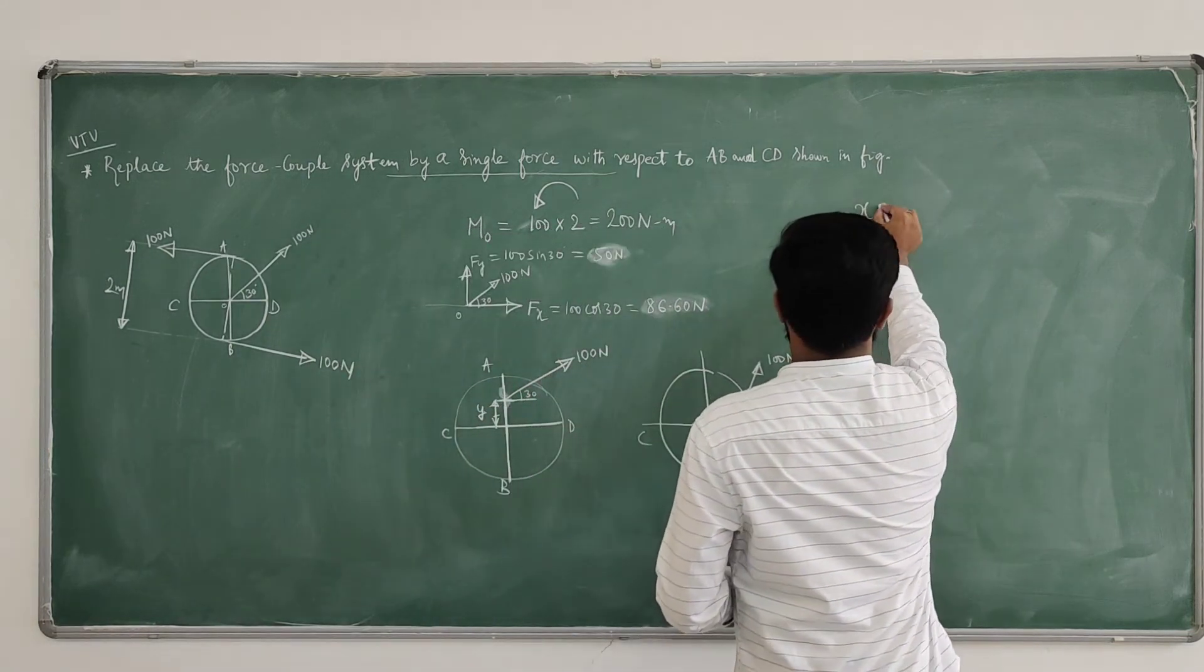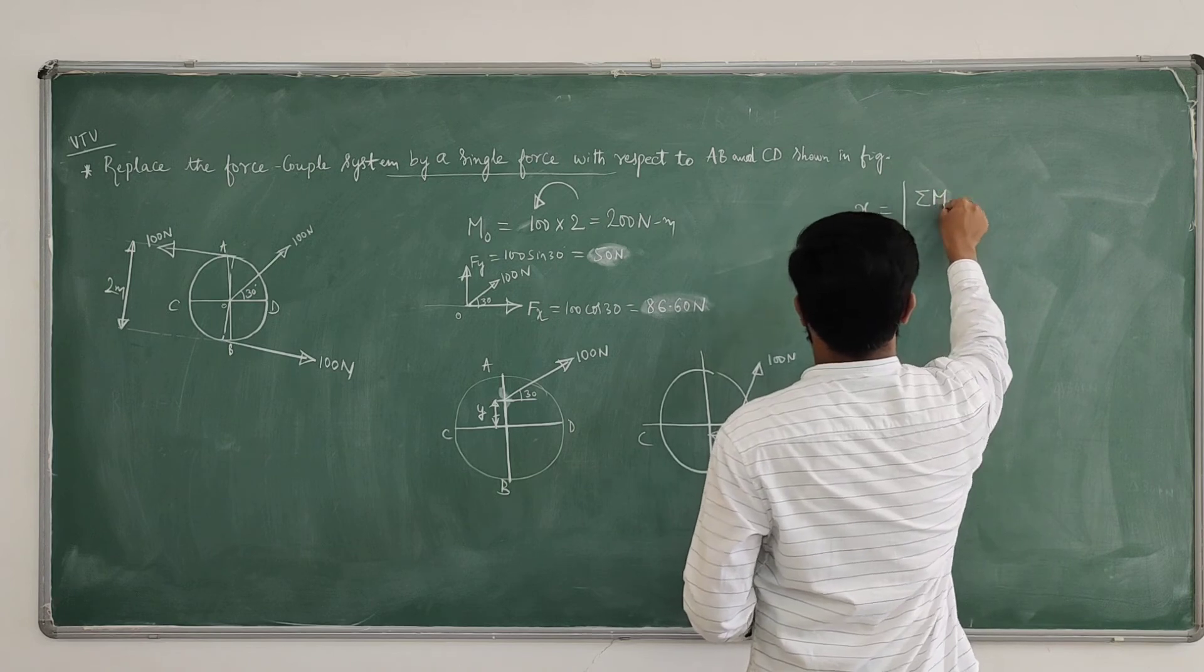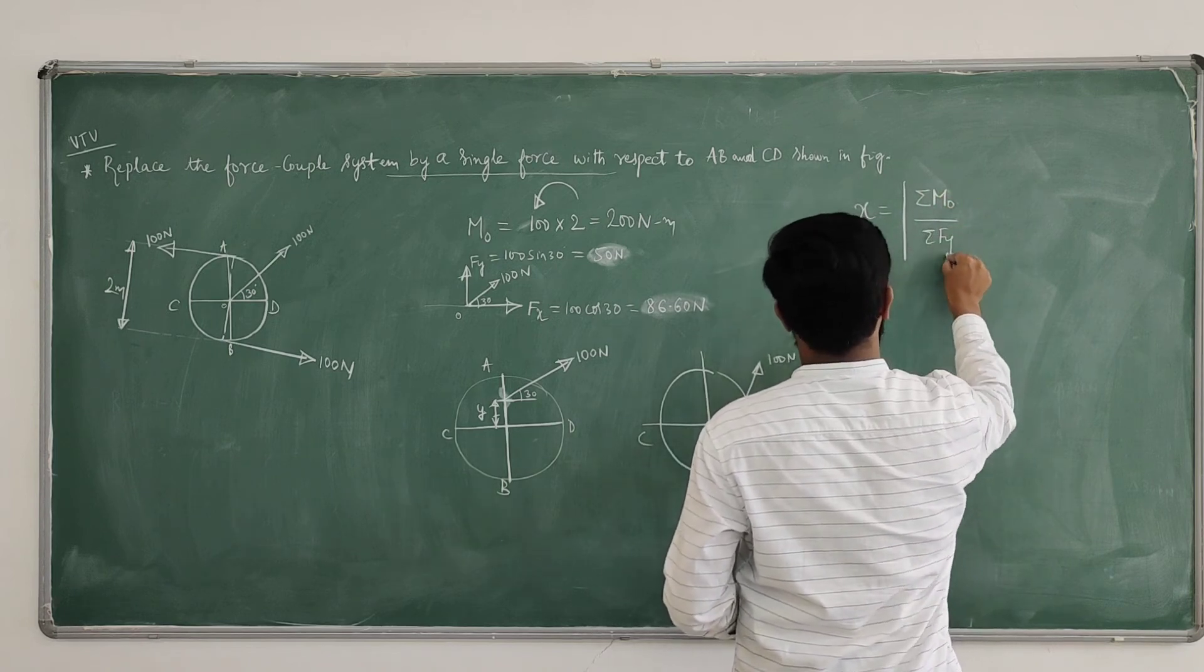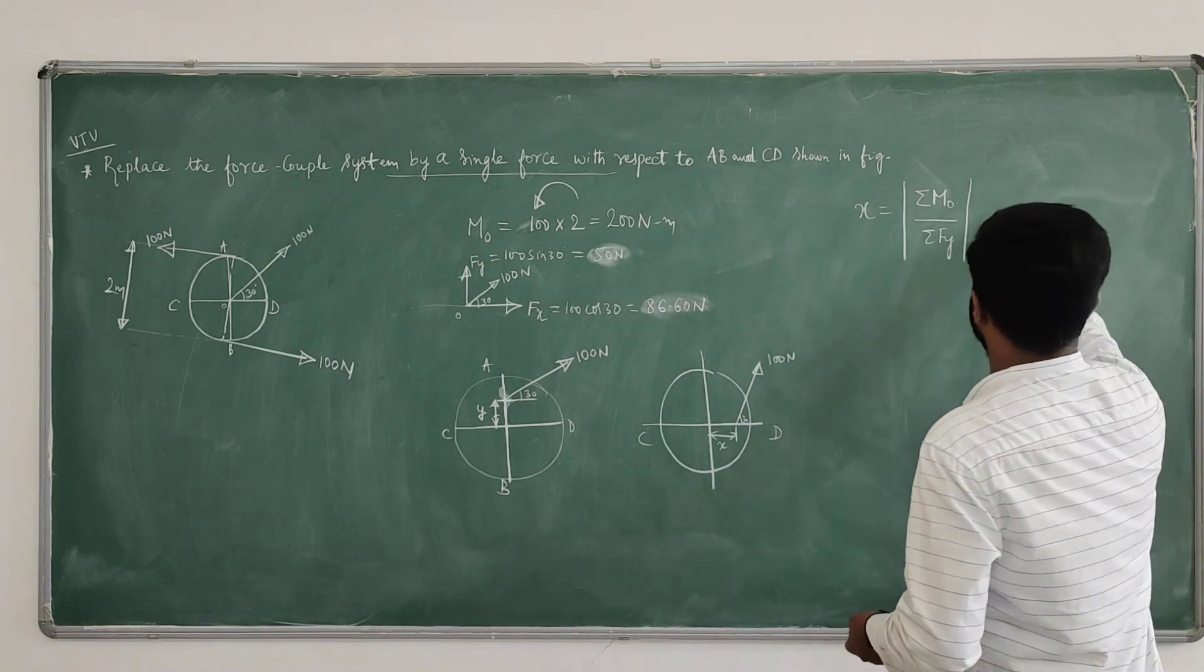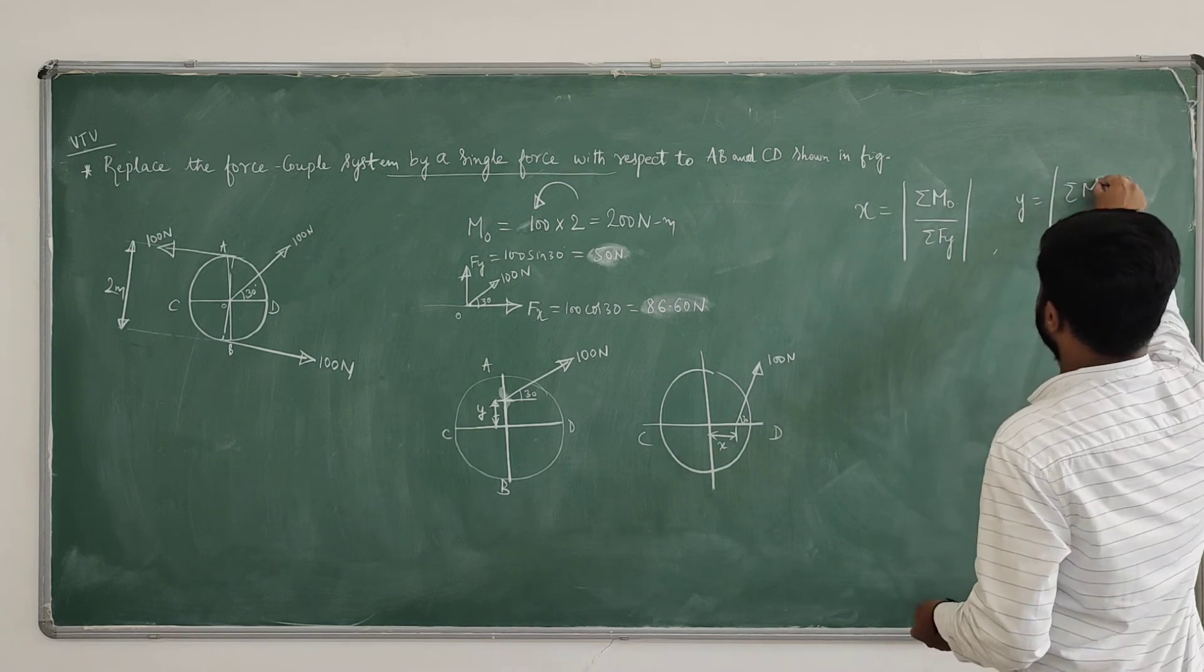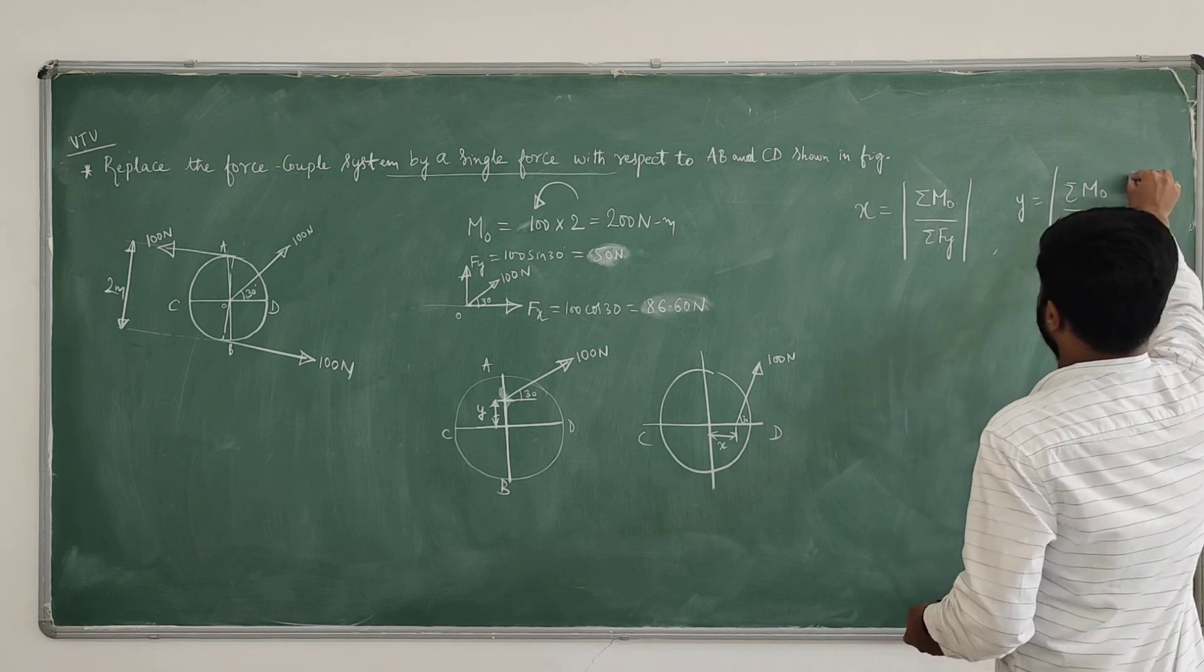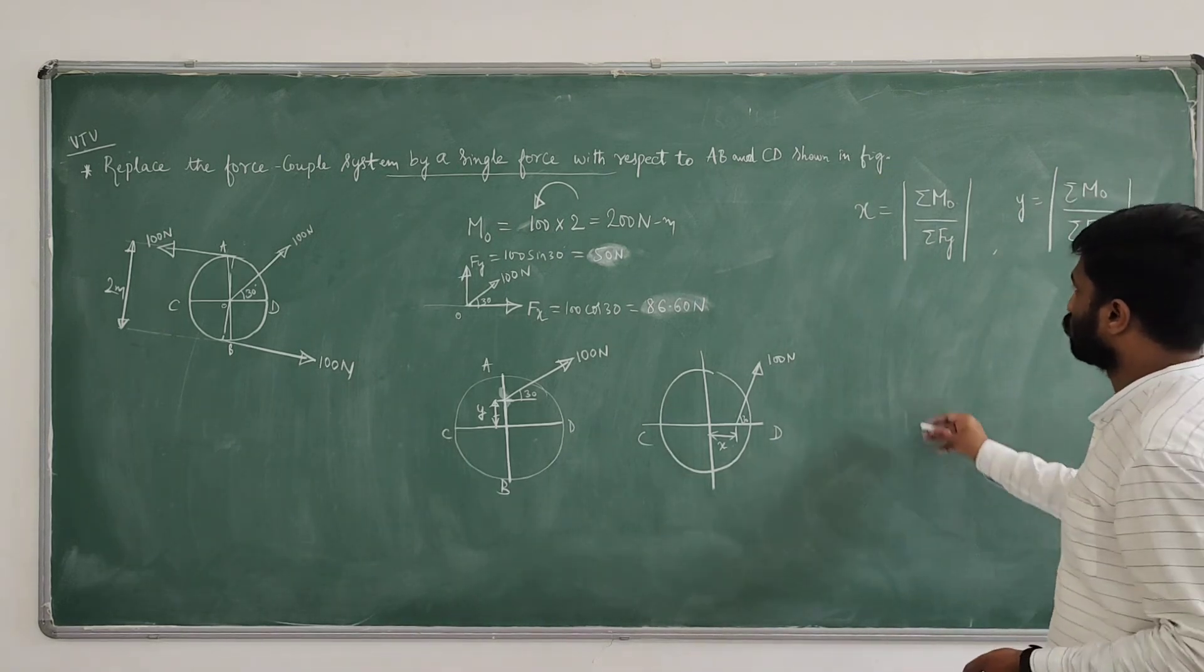X equals integral of sigma M naught or M naught divided by sigma Fy. This is X intercept. Similarly, Y intercept, Y intercept equals integral of sigma M naught divided by sigma Fx. Sigma M naught divided by sigma Fx.